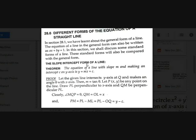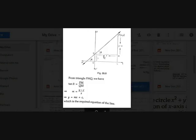First, the slope-intercept form of a line. As the name tells, we need one slope and one intercept. Let the slope be m and the intercept be c. We should prove that the equation is y = mx + c. How can we prove this? Let's see a diagram and observe from it.